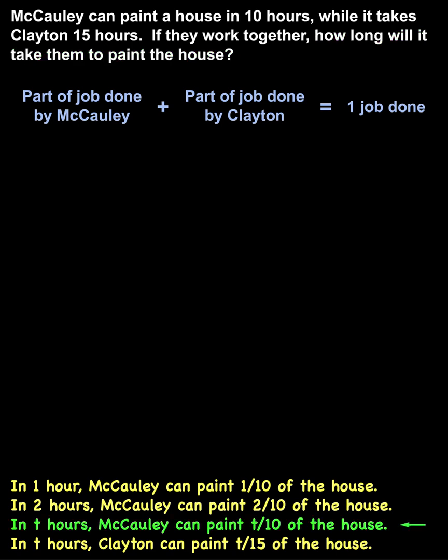Remember that in t hours, Macaulay can paint t-tenths of the house. So the part of the job done by Macaulay is t over 10. And in t hours, Clayton can paint t-fifteenths of the house. So the part of the job done by Clayton is t over 15.